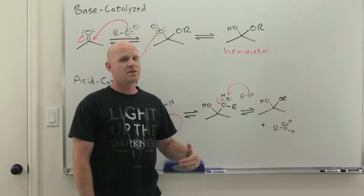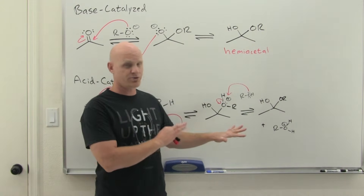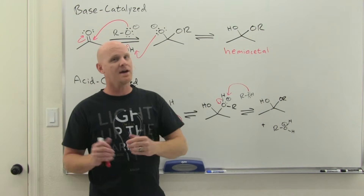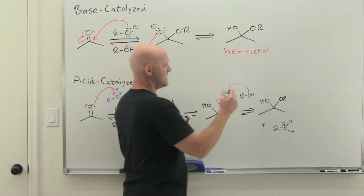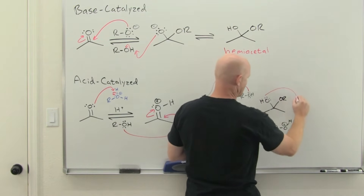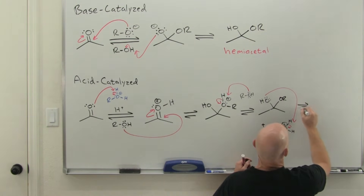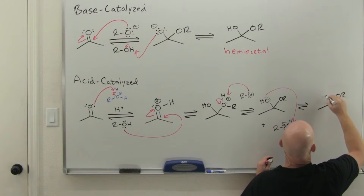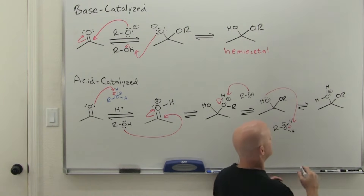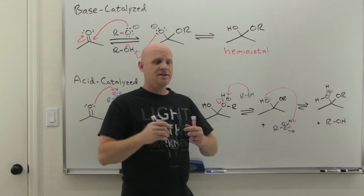We're not done yet — we can take this further under acidic conditions. You learned in the alcohol chapter that OH is a poor leaving group, but you also learned you can protonate it under acidic conditions to turn it into a good leaving group — water. That's exactly what we do here. We take the hydroxyl group of the hemiacetal, use the protonated alcohol as the acid, and protonate it. Now we have a good leaving group, and we also regenerate an equivalent of the alcohol.